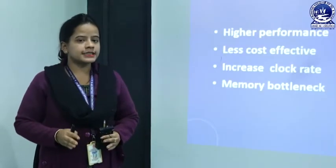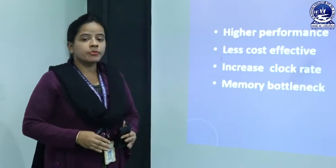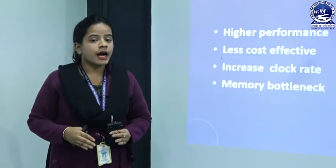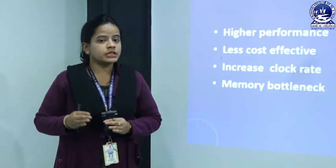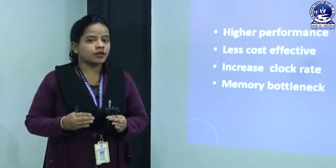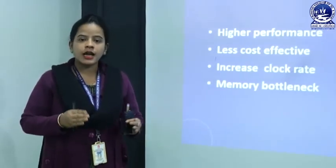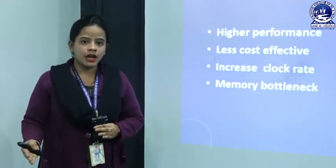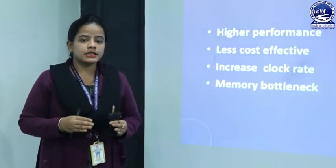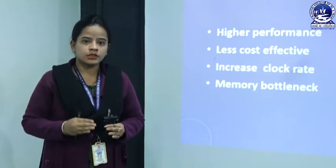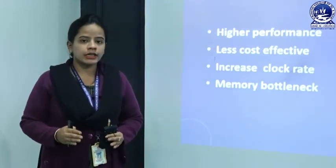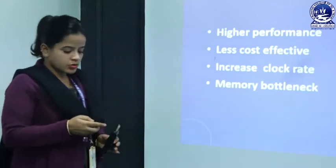Another difference is the memory bottleneck. In three-stage pipelining there is a memory bottleneck disadvantage, but in five-stage pipelining it is avoided. Five-stage pipelining uses different locations for storing operands and storing resultant outcomes — raw data is stored in one location and resultant outcomes are stored in another, so there is no conflict. In three-stage pipelining only one location is used to store both desired outcomes and raw data, causing the memory bottleneck issue.